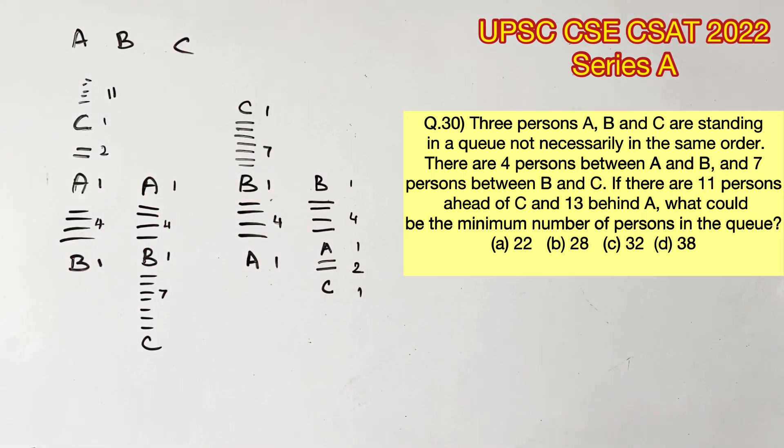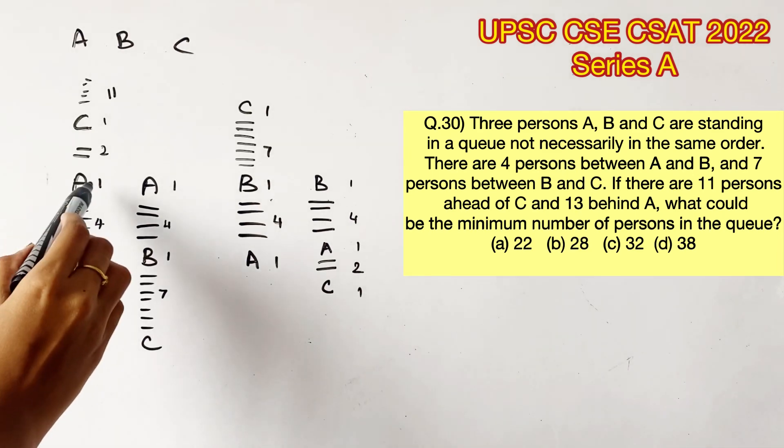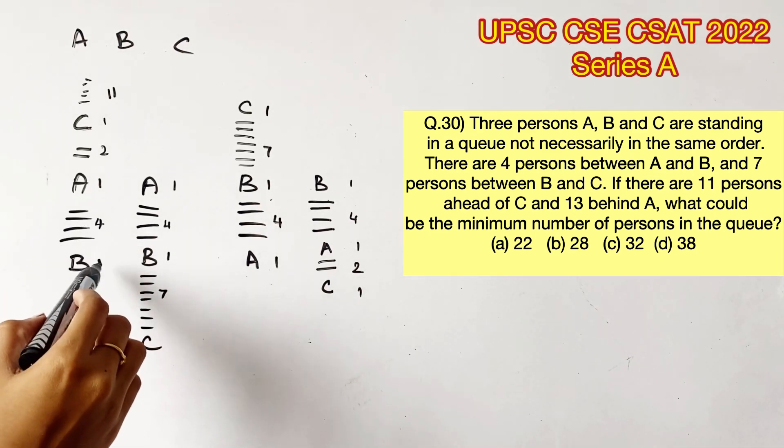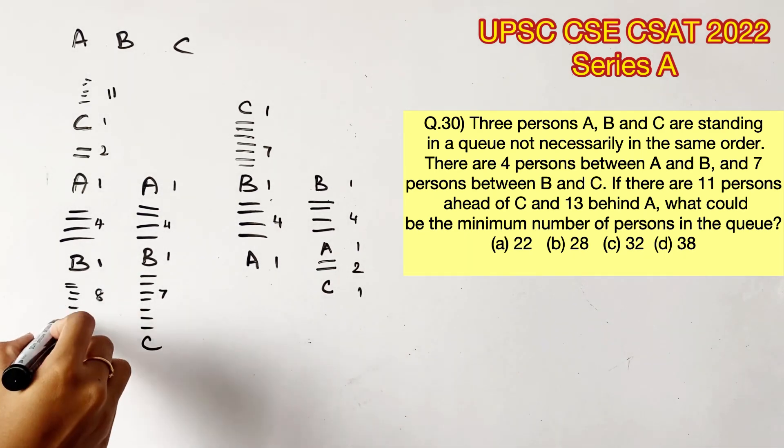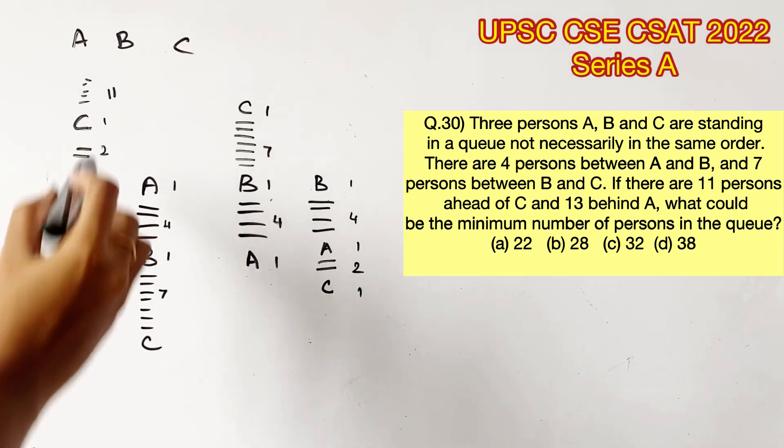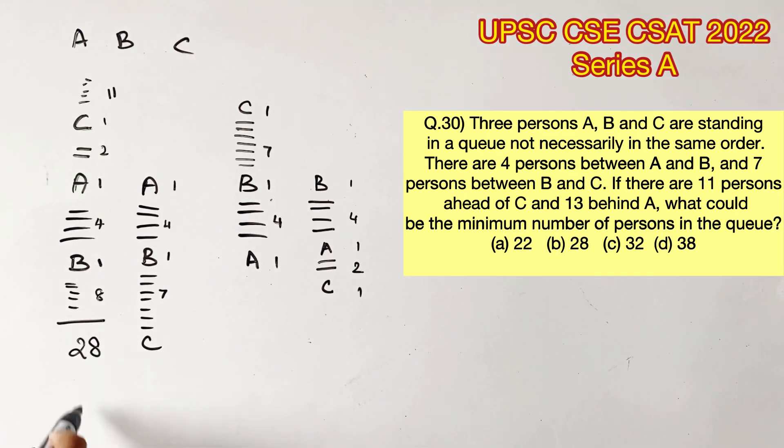And we will have to count 13 behind A. So there is already 5 behind A. So 13 minus 5 will give us 8. So this is the whole queue in the first possibility. Let's add these up. This will give us 28.